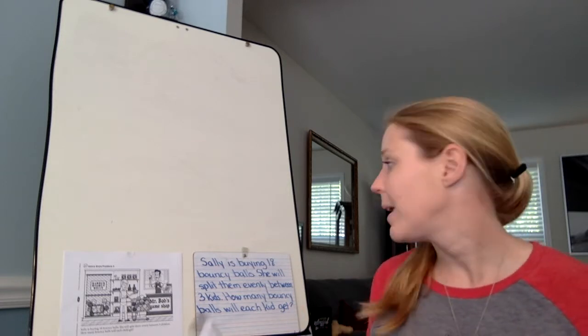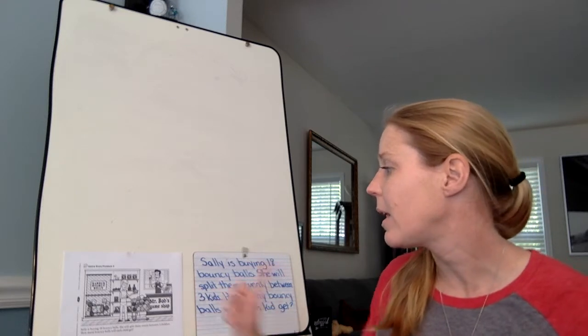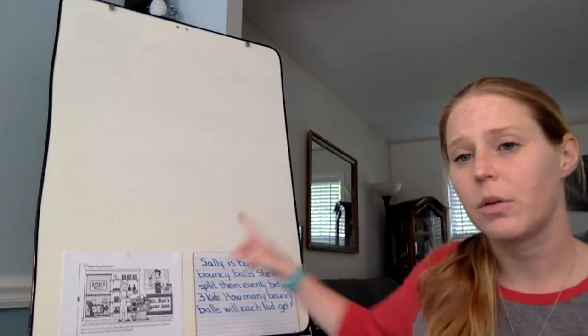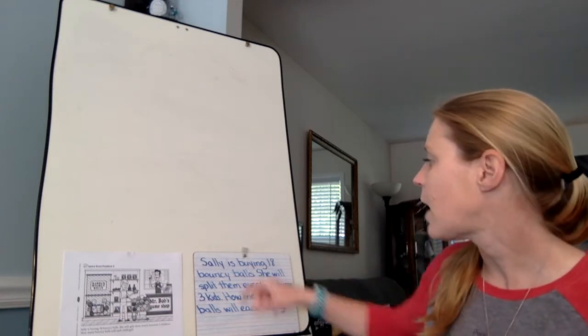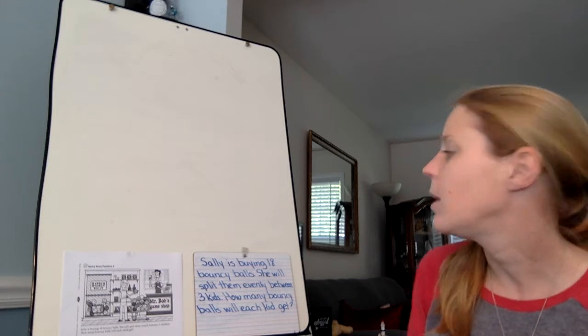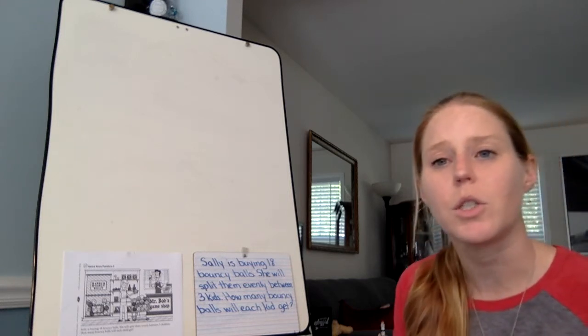So we are back in Mr. Bob's music shop and he is selling bouncy balls today to Sally. This is our friend Sally. Sally is buying 18 bouncy balls. She will split them evenly between three kids. How many bouncy balls will each kid get?